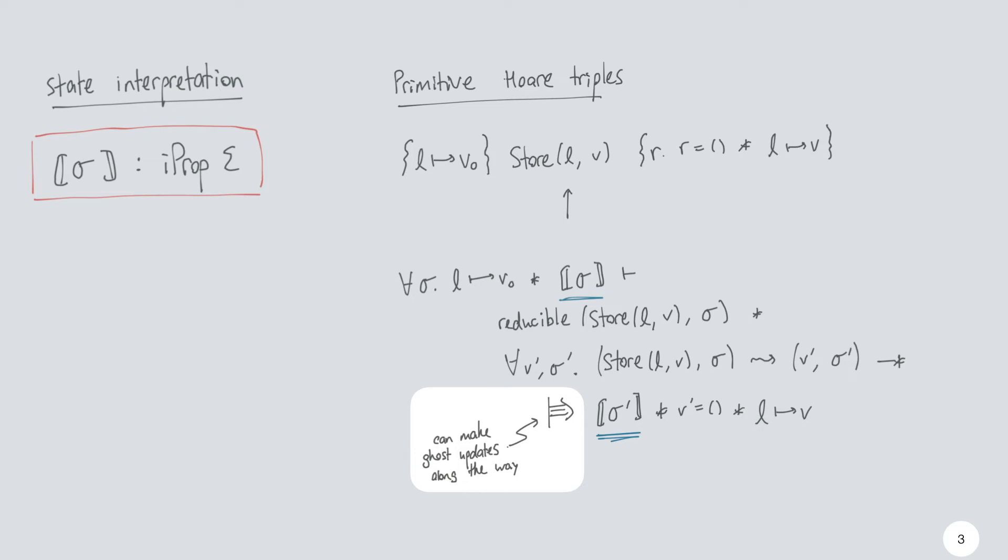There's one thing I glossed over, which is this so-called fancy update modality. The fancy update modality says that while we're proving this weakest precondition, we're also allowed to update any ghost state before proving that the state interpretation holds. And this is necessary because we actually need to update the ghost state to match the transition that store made. And that's also what's going to take the L points to V0 fact and actually transform it into L maps to V.